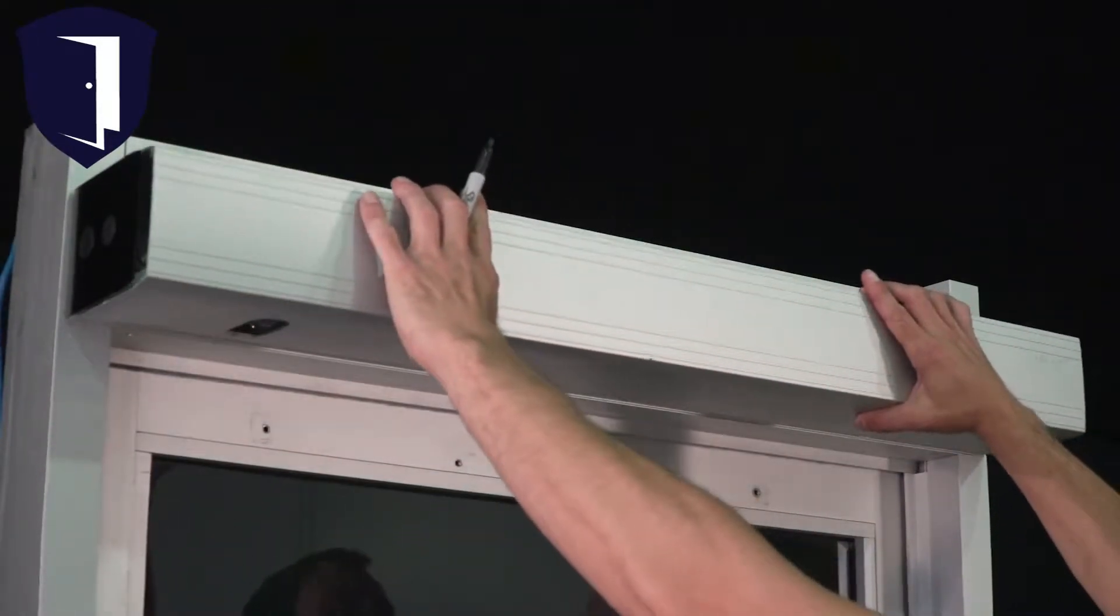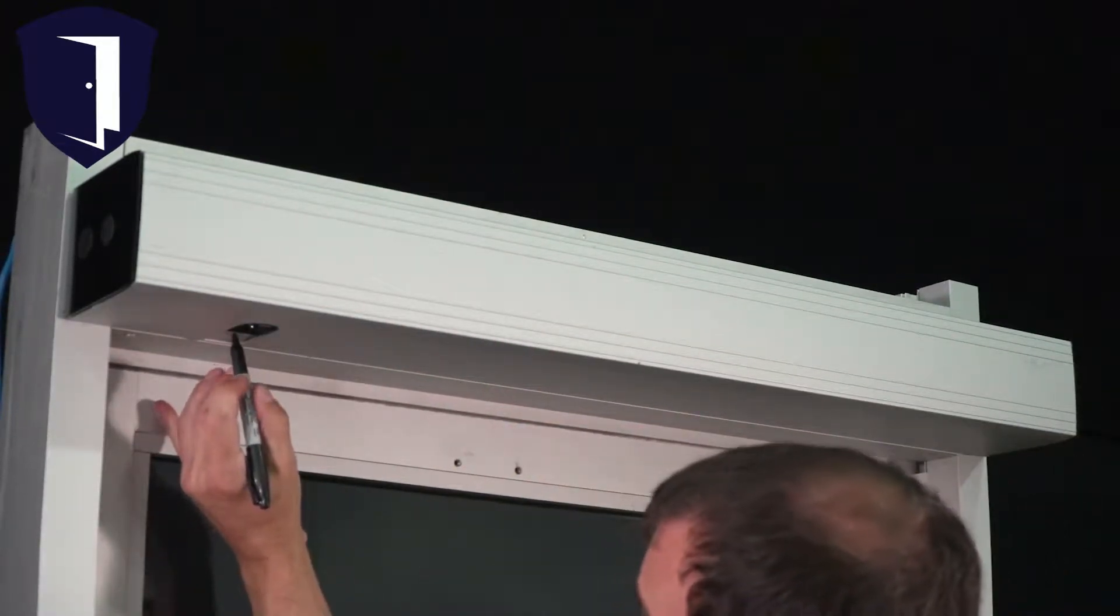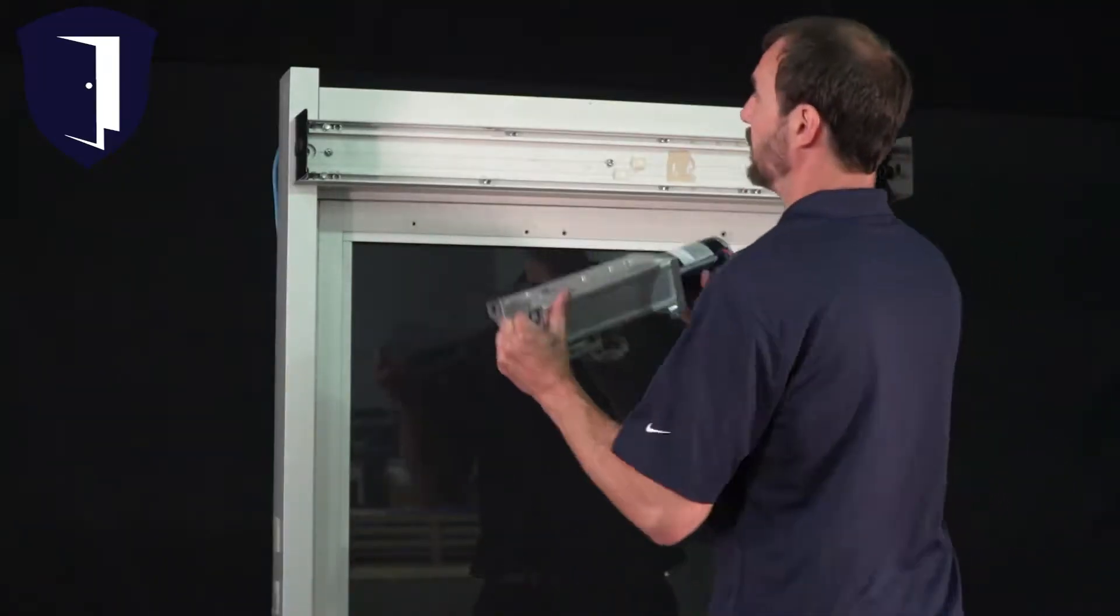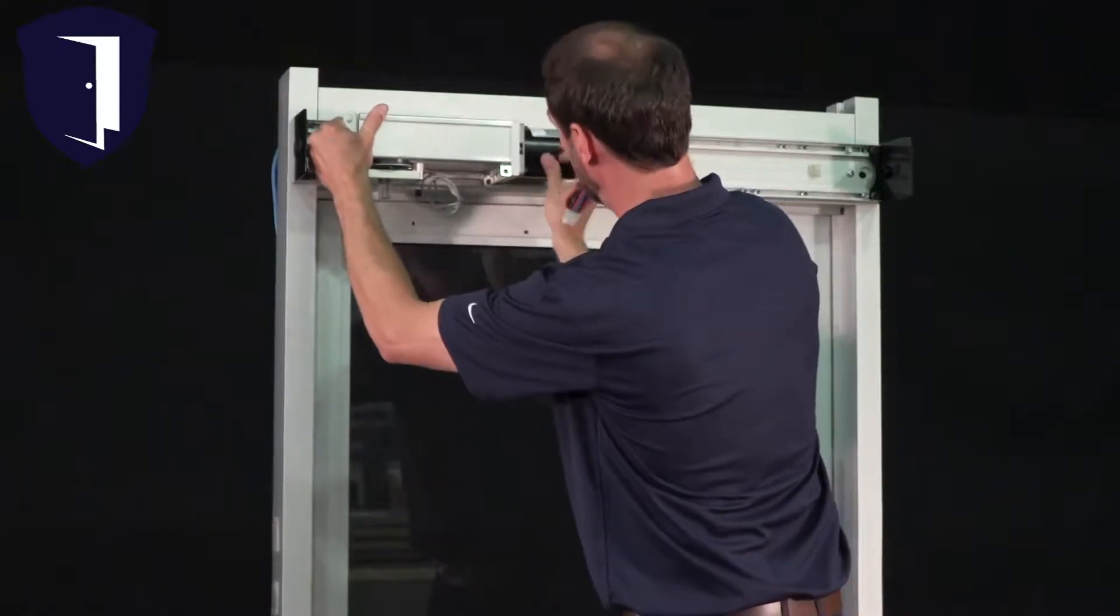Next, temporarily install the cover and mark the gearbox at the center of the gear opening. Remove the cover. This mark becomes a guide to help place the gearbox in the proper location. Just line up the gear to the mark.